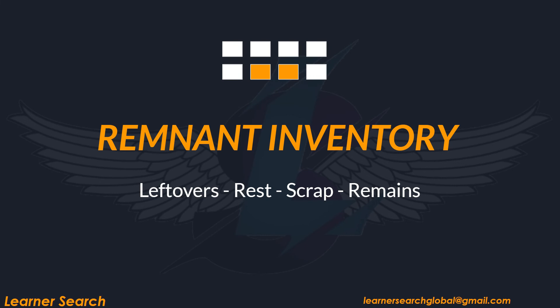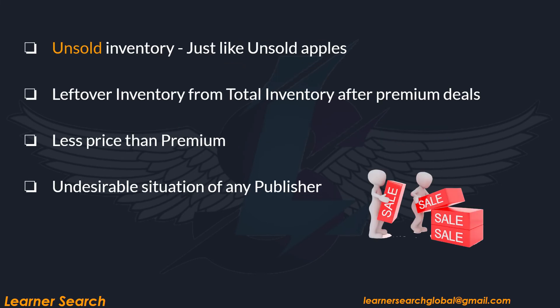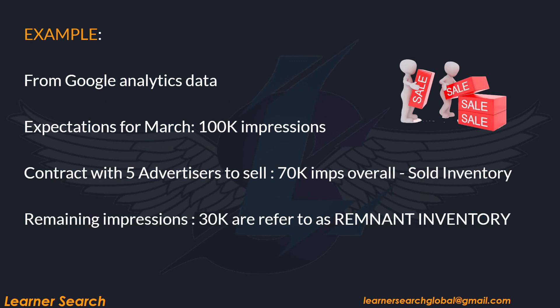Remnant inventory is also known as leftover inventory — other terms include rest, scrap, leftovers. Like unsold apples, it's unsold inventory. After premium deals between publisher and advertiser, it's the leftover inventory from total inventory. This remnant inventory is sold for a lower price than premium since there is less demand for it, and hence it costs less in the market. We can say it is an undesirable situation for any publisher. When a publisher is expected to deliver 100k impressions, only 70k were sold and 30k were unsold — those 70k are sold inventory and the remaining 30k is referred to as remnant inventory.